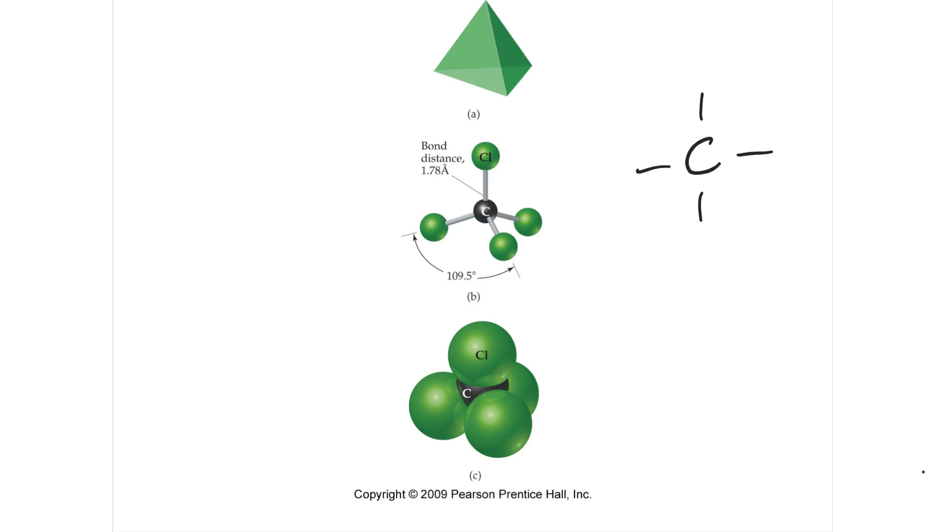We have carbon with four chlorines, and the chlorines each have three lone pairs. There are eight valence electrons around chlorine, all the chlorines, and eight around the carbon. So this is a Lewis structure of carbon tetrachloride.